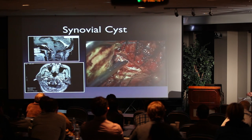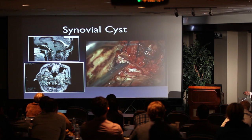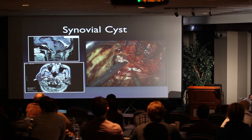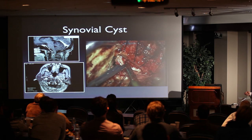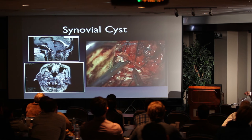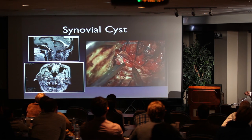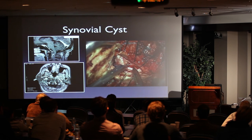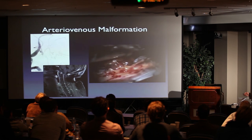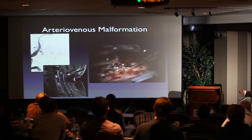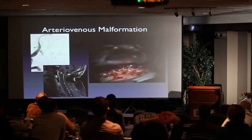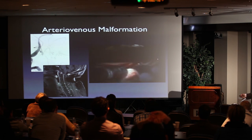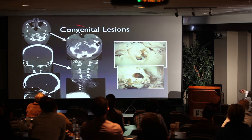Melanocytoma is another foramen magnum lesion — not common, looks like a meningioma but is black. Benign synovial cyst — this is one of Dr. Robertson's cases where preoperatively it wasn't clear what it was. Far lateral approach here: opening going extradurally, then inside the dura — just synovial cyst contents. This is the AVM we saw earlier — nice exposure, resection with very little retraction; here's the dentate ligament moved over.